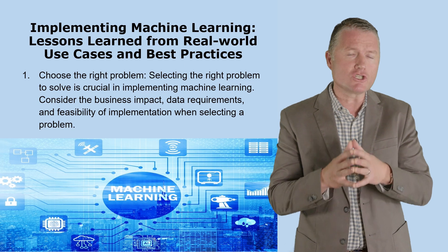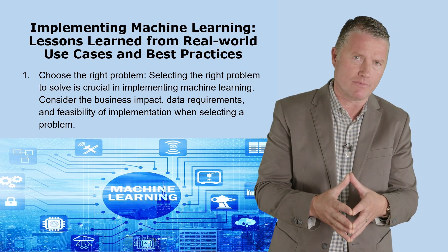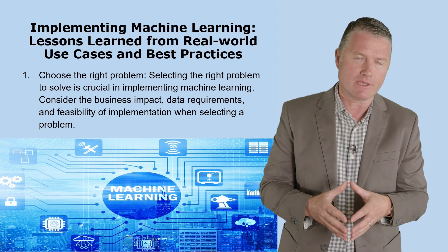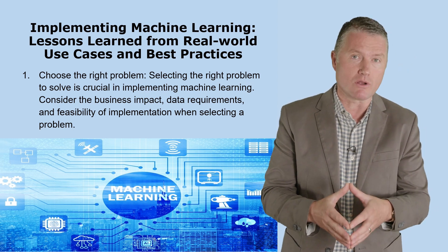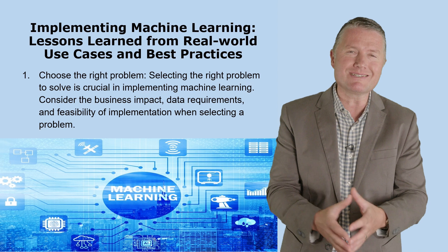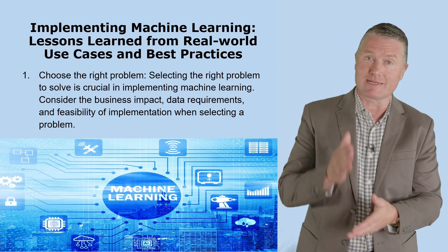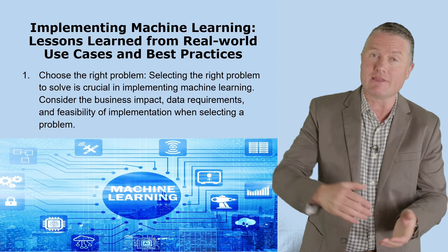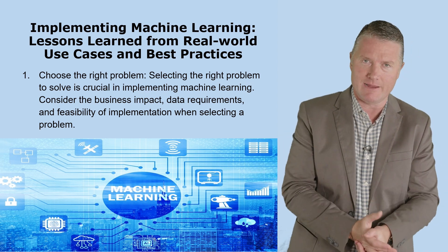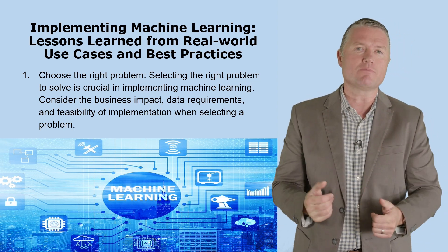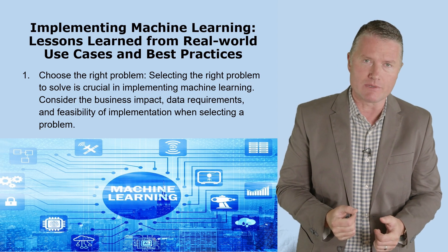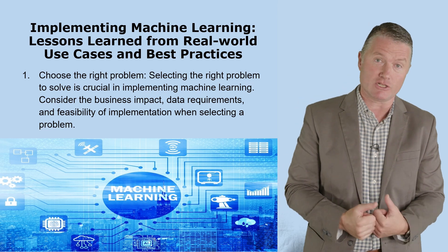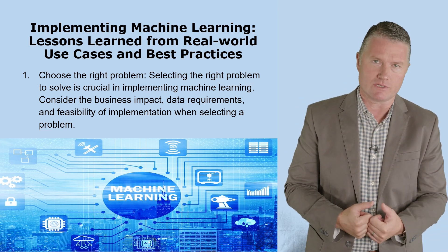Firstly, you must choose the right problem. One of the crucial steps in implementing machine learning is selecting the right problem to solve. It's important to identify a problem that has a clear business objective, well-defined data requirements and a feasible implementation. Consider the problem's impact on the business, the availability of relevant data and the potential for achieving meaningful results.